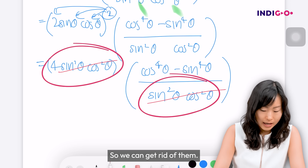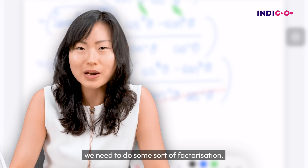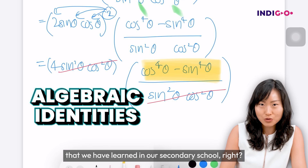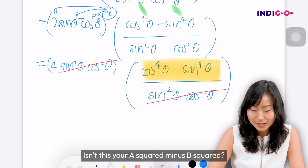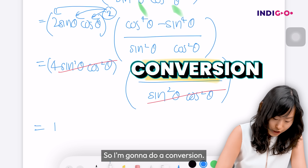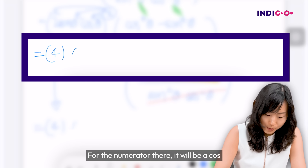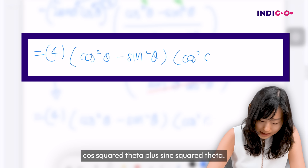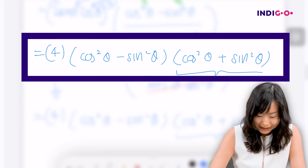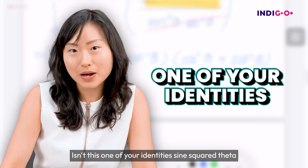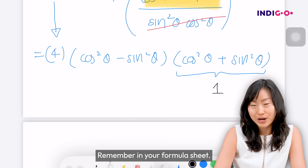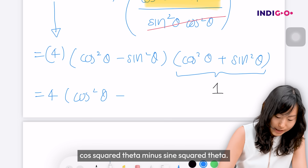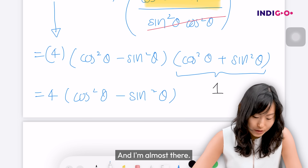After cancelling, for the numerator we can use algebraic identities from secondary school — isn't this your a squared minus b squared identity? So I do a factorization. After cancelling, I'm left with four times the quantity cos squared theta minus sine squared theta, times cos squared theta plus sine squared theta. And isn't that one of your identities? Sine squared theta plus cos squared theta equals one — from the formula sheet — so I'm just left with four times cos squared theta minus sine squared theta.